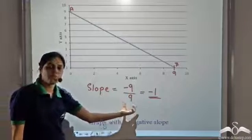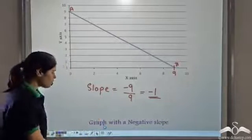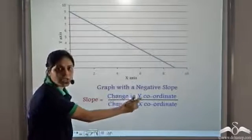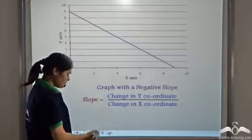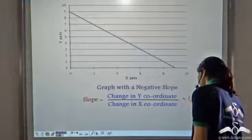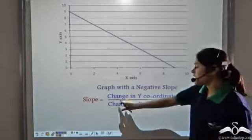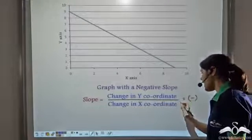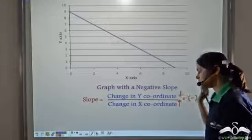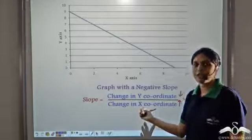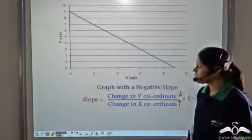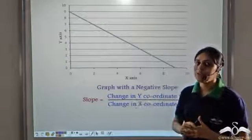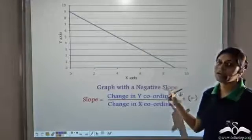We always take the run to be positive because we are moving from left to right. Now what is the implication of a graph with a negative slope? Slope is defined as change in y-coordinate by change in x-coordinate. If the slope is negative, it means there is a negative relation between the two: as the x-coordinate increases, the y-coordinate decreases. So whenever we have a graph with a negative slope, we can say that as x increases, y decreases.